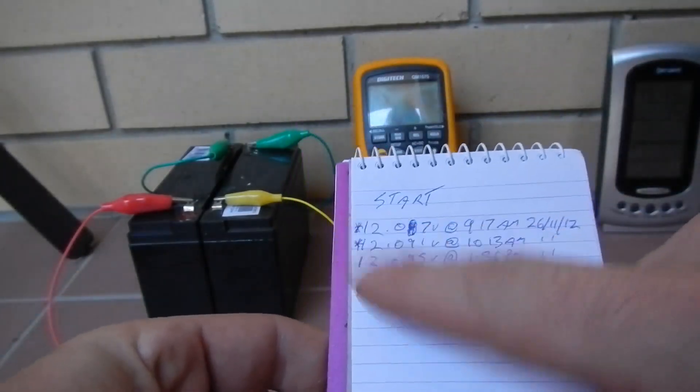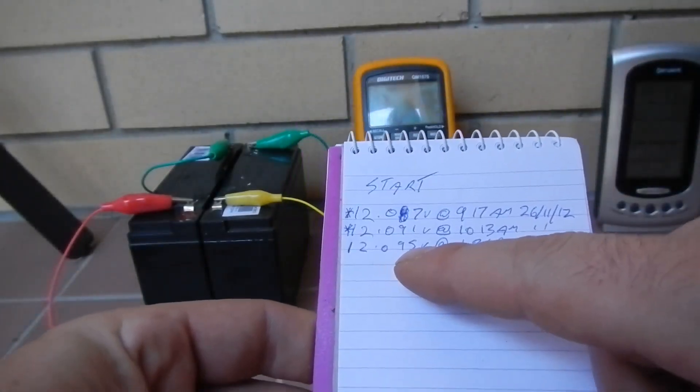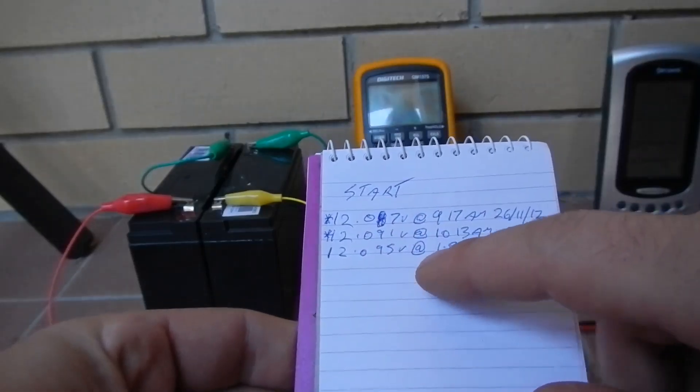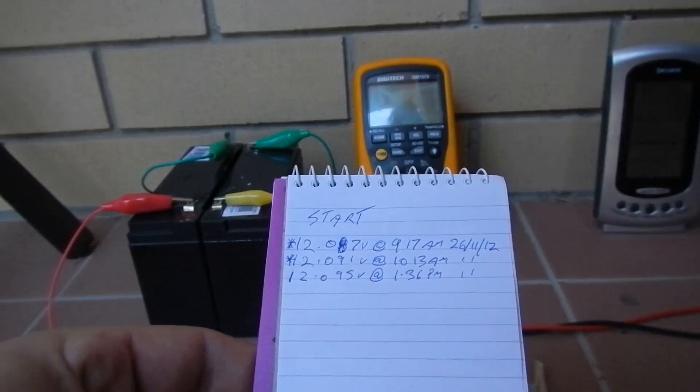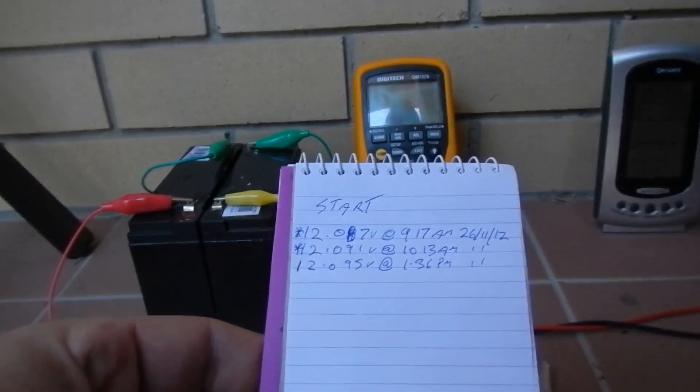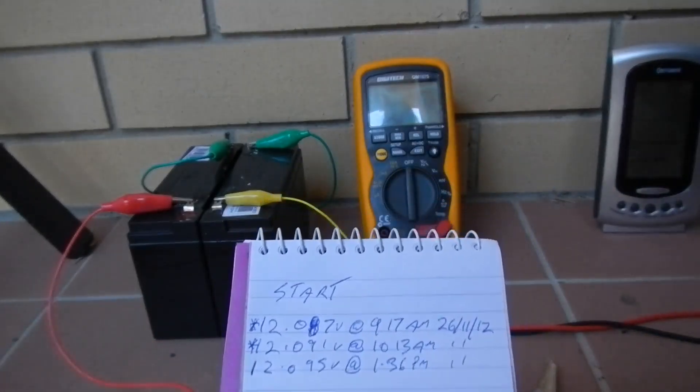I came out again just after 1:30 and I got 12.095, so we are going up. The other thing I did notice was that it dropped off 2 millivolts in a few seconds while I had the multimeter on there. So you definitely can't leave the multimeter hooked up.